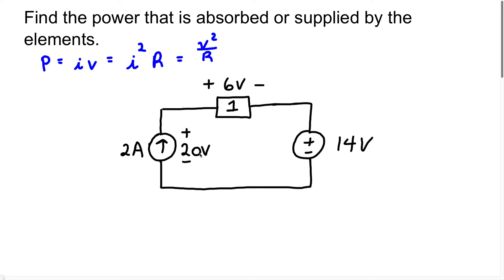They want us to find the power that is absorbed or supplied by the elements. When we look at this circuit, we can see we have three elements: a current source, a box (we're not sure what's in it, so we just label it element one), and a voltage source. Since we don't have any resistors, the only formula we can use is the first one: current times voltage (P = IV).